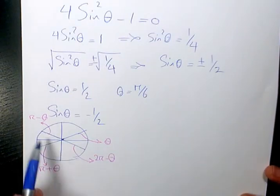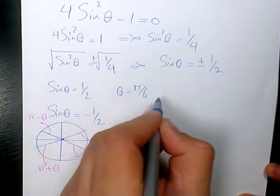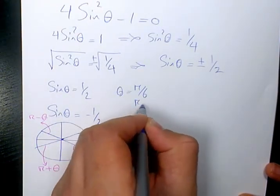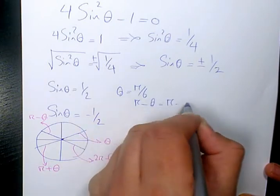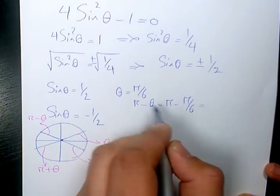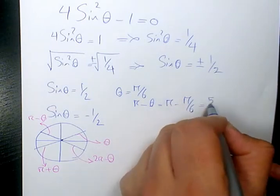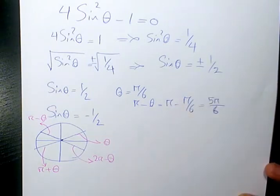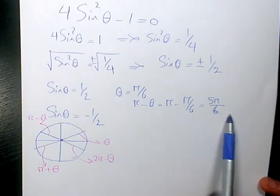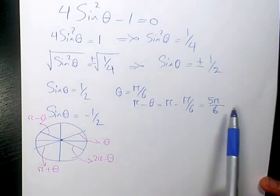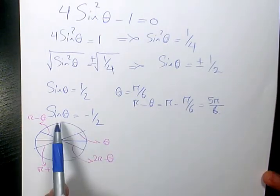So the other answer for the first one is going to be pi minus theta, which is going to be pi minus pi over 6, which will be 6 pi minus pi, which is 5 pi over 6, which is going to be equivalent to 150 degrees. 30 degrees, 150 degrees.